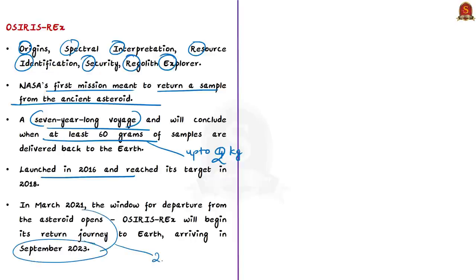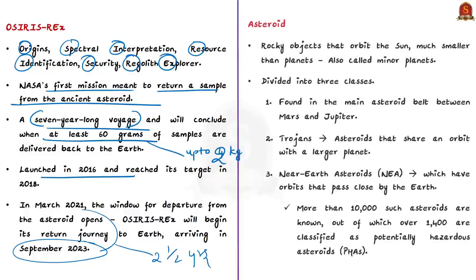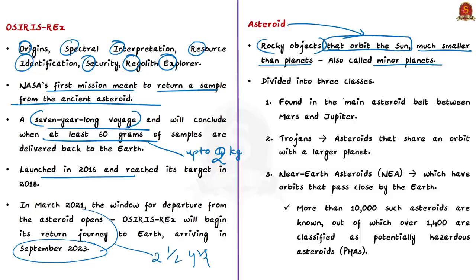The sample will then be studied by scientists. Asteroids are rocky objects that orbit the Sun, much smaller than planets, and therefore also called minor planets. Asteroids are divided into three classes: those found in the main asteroid belt between Mars and Jupiter, where around 1.1 to 1.9 million asteroids are estimated to exist; Trojans, which share an orbit with a larger planet; and near-Earth asteroids.